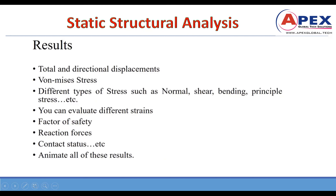Von Mises stress is a type of failure criterion — it is essentially the maximum stress in the component. Every material has its own yield stress. Once the Von Mises stress reaches or exceeds the yield stress, the material may fail. If the Von Mises stress is less than the yield stress, then the design is safe.